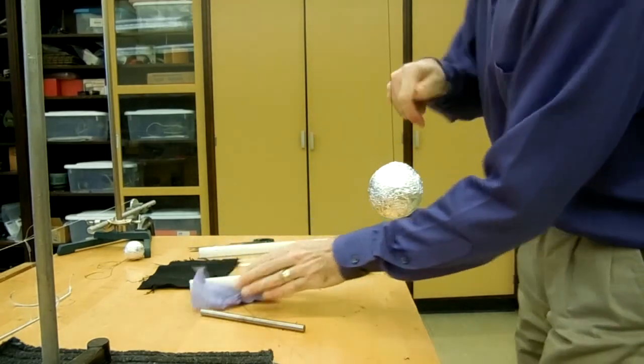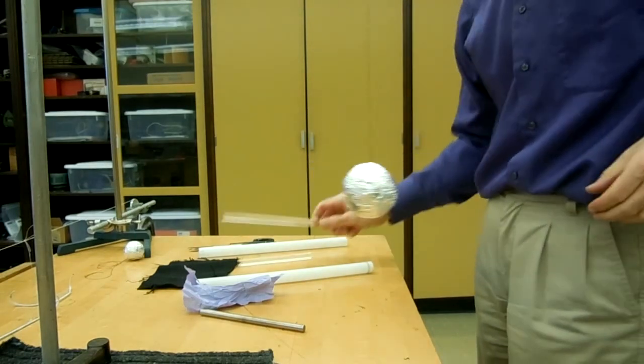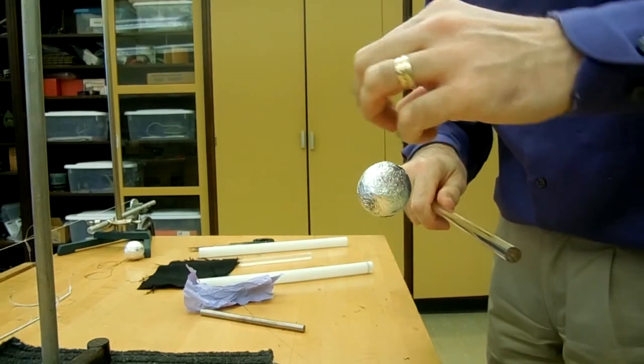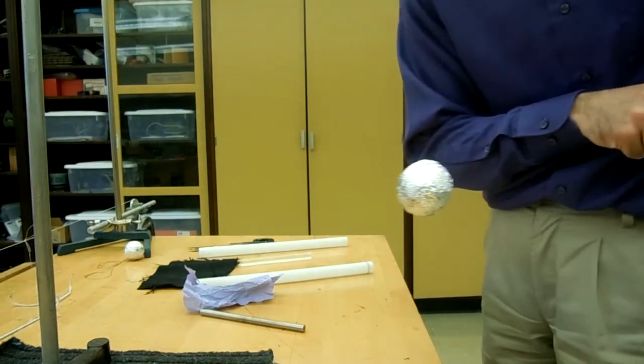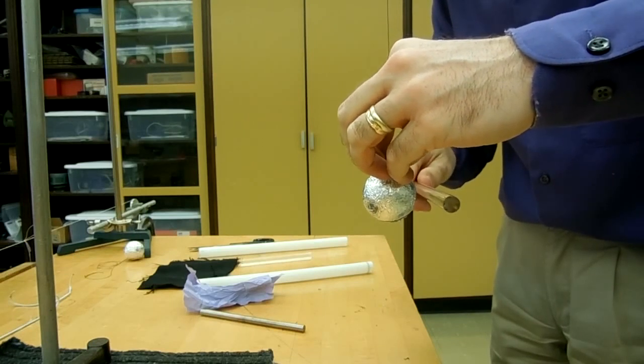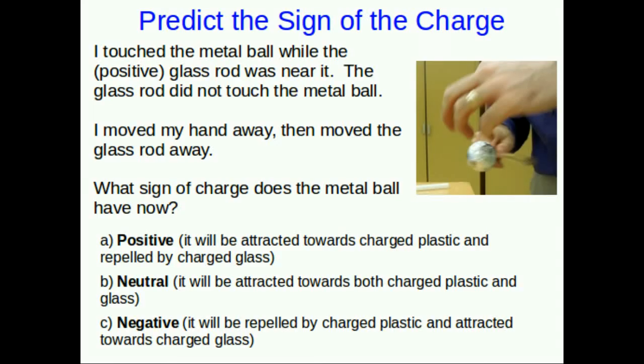Now I want you to predict the outcome of this demonstration. I'm going to charge the glass rod and hold it close to the metal ball but I'm not going to touch it to the metal ball. What I am going to do is touch the metal ball with my fingers while holding the glass rod close. And then I'm going to let go of the ball and then move the glass away. I have to do them both very quickly but I let go of the ball first. At the beginning of the next lecture I am going to bring the plastic rod close to that metal ball. Is it going to attract it or is it going to repel it? In other words, using the glass rod and touching the ball with my fingers, did I just give this ball plastic charge, negative, or glass charge, positive?